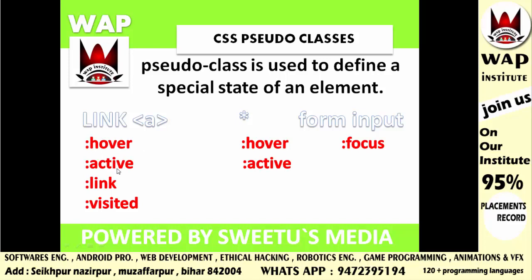Active का मतलब है — आप चाहते हो कि जब मैं किसी text पे click करूँ, तो उस text में कोई बदलाव हो, तो उसके लिए आप active pseudo-class का उपयोग करोगे। Link का मतलब है — जिस चीज को आपने पहले से link करके रखा है, वो किस तरह का पहले से नजर आएगा, ऐसा define करने के लिए हम link pseudo-class का उपयोग करते हैं। इसको आप unvisited link भी कह सकते हो — means एक ऐसा link जिस पे user ने अभी तक click नहीं किया हो।